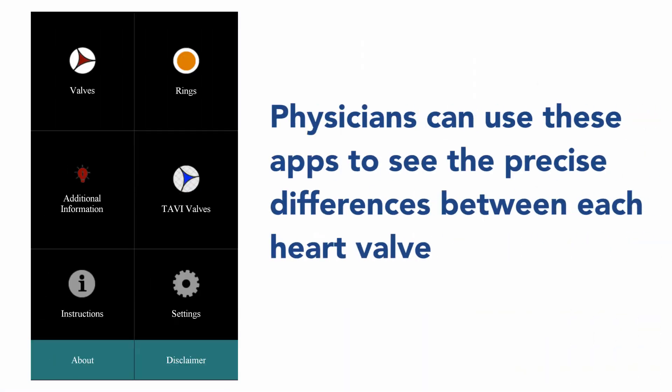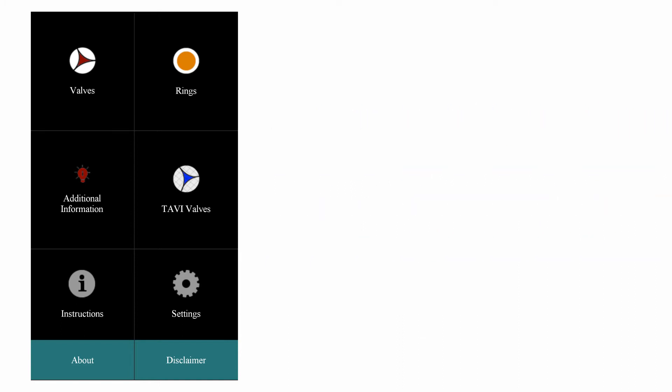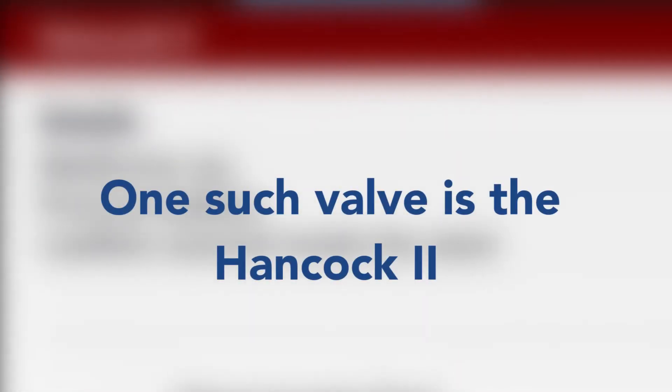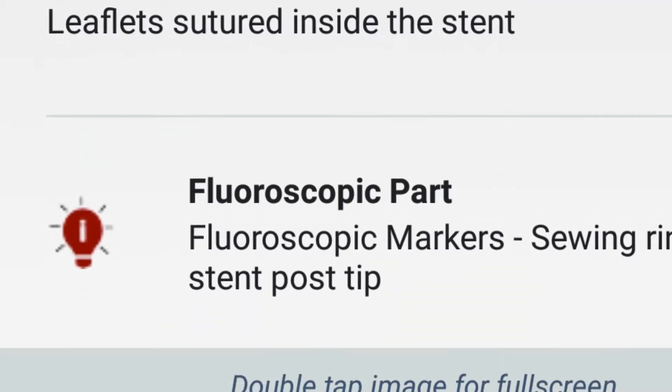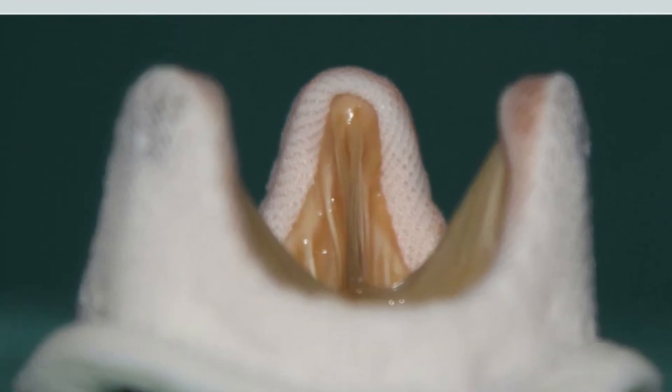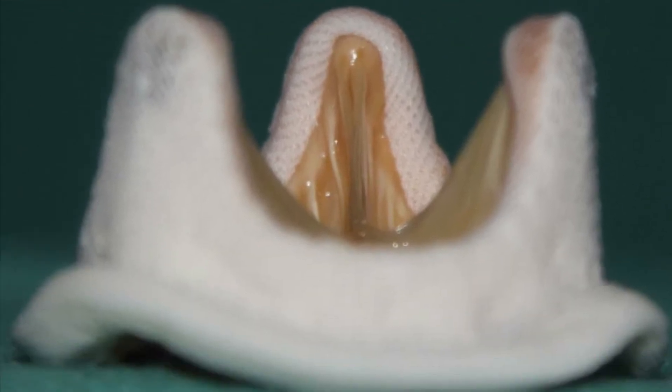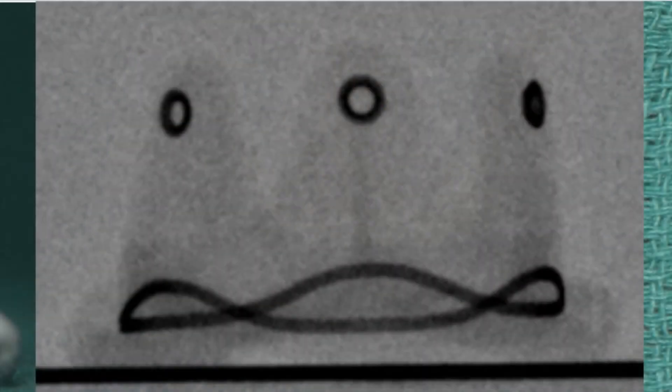There are two apps — the red one is the aortic and the blue one is the mitral. There's information about each particular valve, including pictures of how the valve actually looks and how it looks under x-ray.